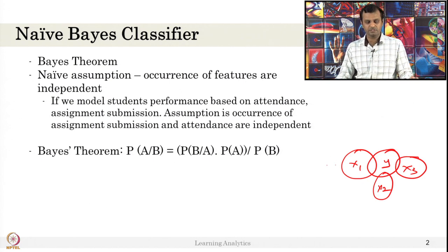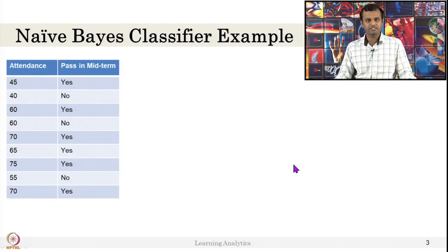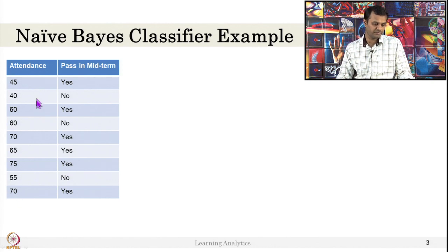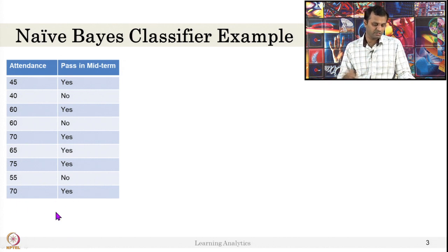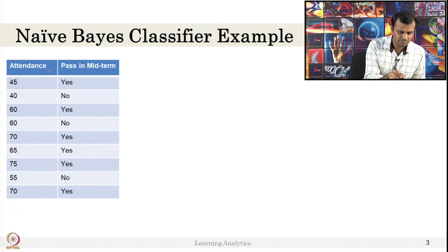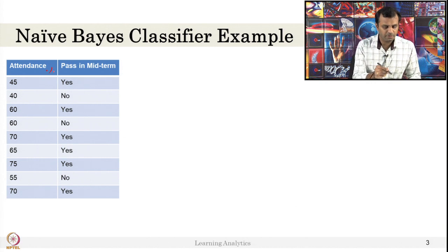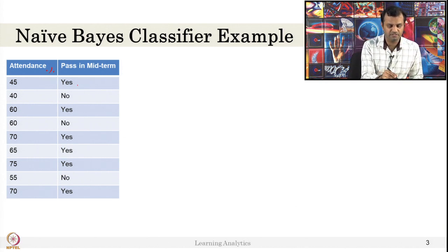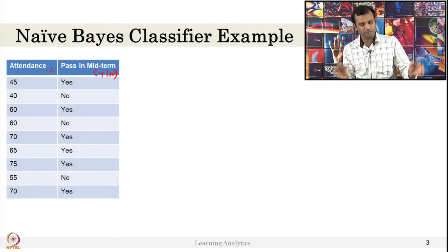The simple Bayes theorem is this — you remember that from the last video. Let us see how Naive Bayes classifier can be used. Here is a simple example: if the attendance is a certain percentage and the pass mark in the midterm is given, we want to determine whether a student passed or failed — yes or no.